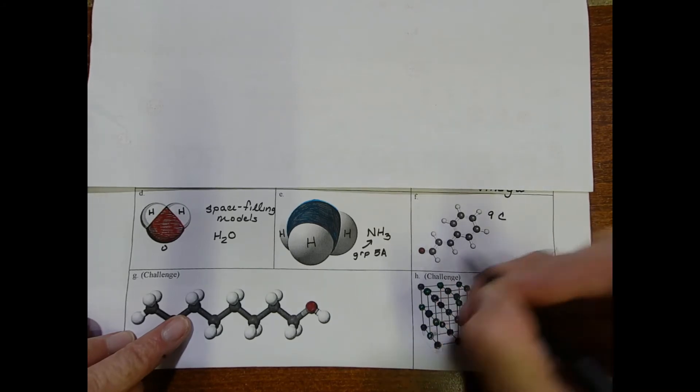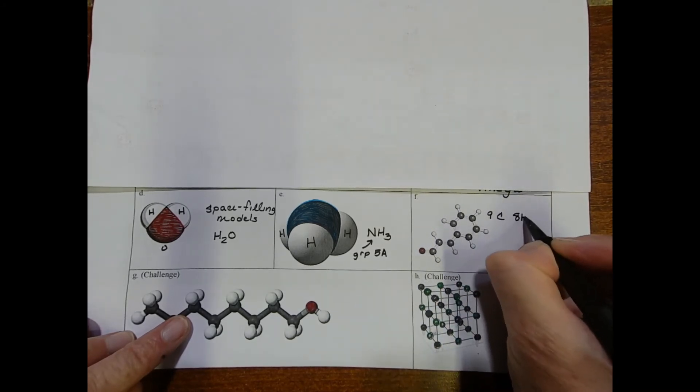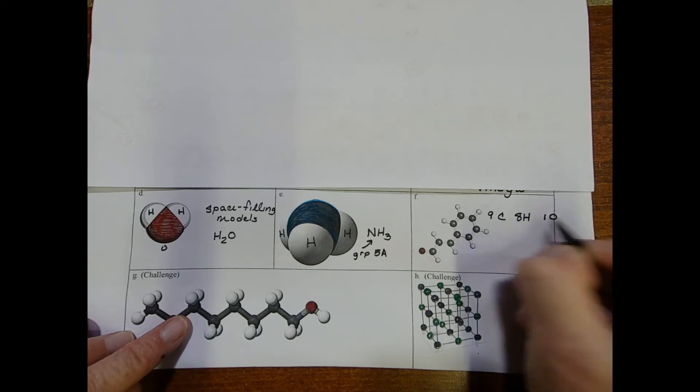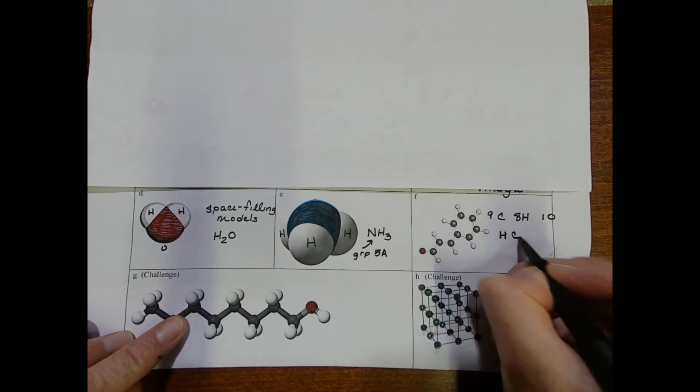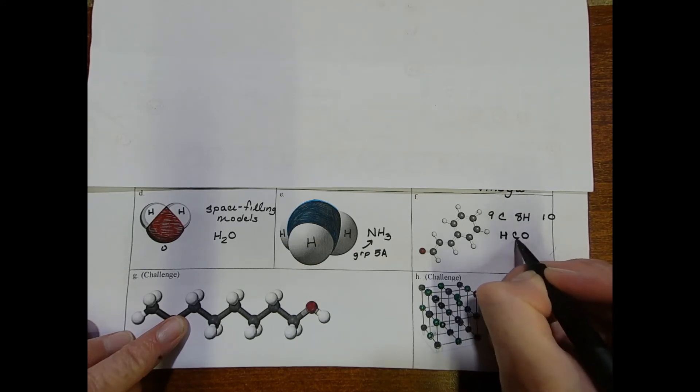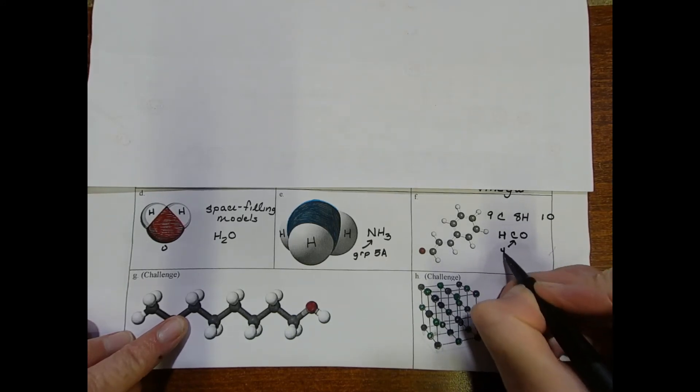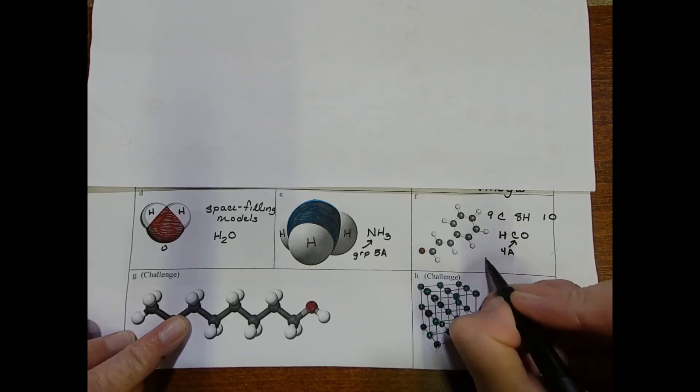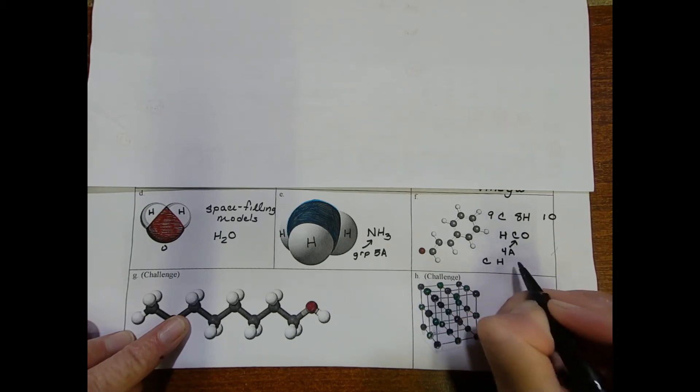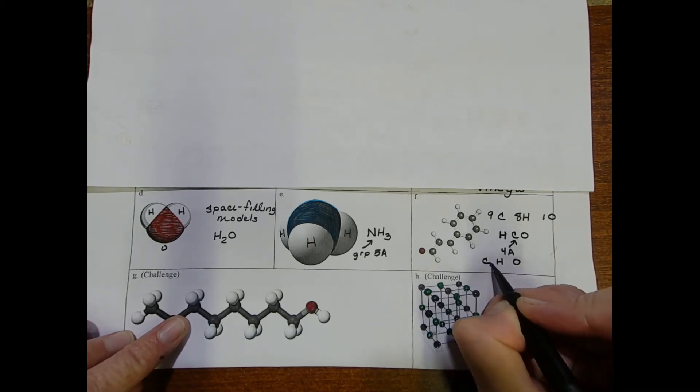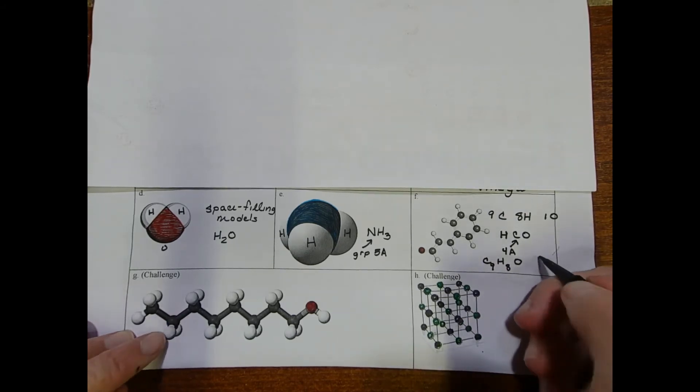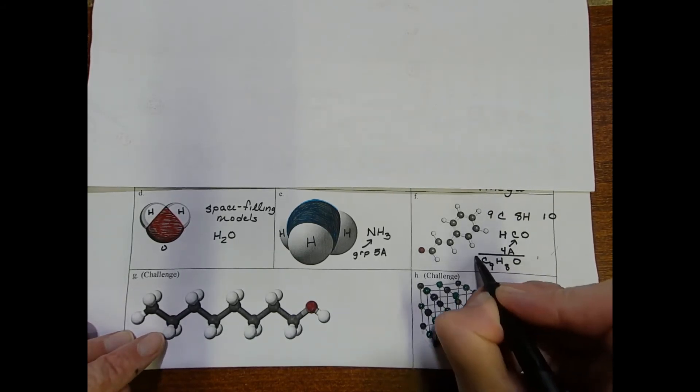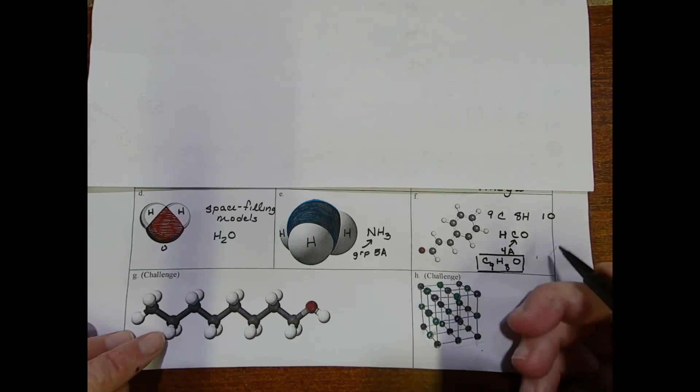1, 2, 3, 4, 5, 6, 7, 8. 8 hydrogens. And 1 oxygen. So from left to right, it would be HCO. But we have a group 4A element. So I'm going to put CHO. So this is going to be C9H8O1. Where the 1 is understood.